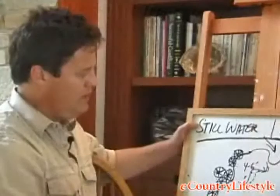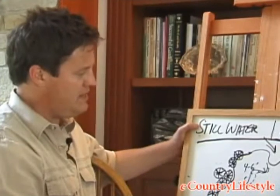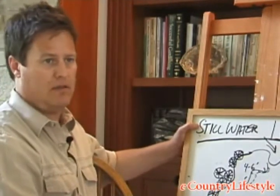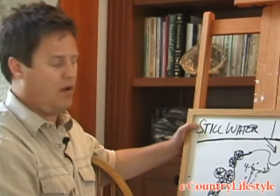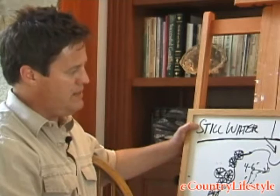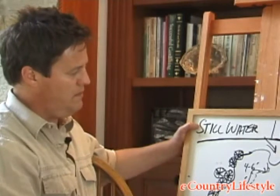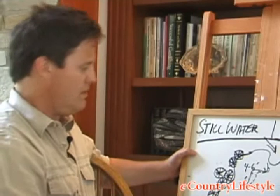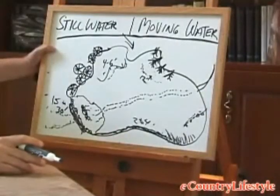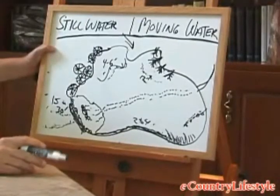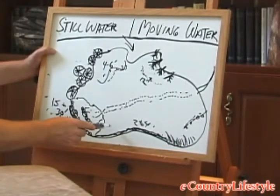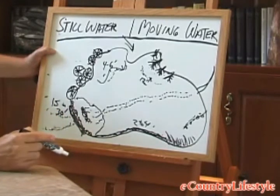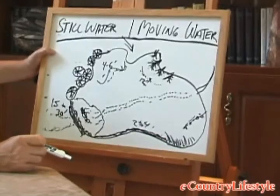Smallmouth bass is another story. Smallmouth bass tend to like cooler, more clear water, whether it be still water or moving water. In lakes and reservoirs during the summertime, you're going to find smallmouth bass in deeper water — they love to hang around submerged rocks and shoreline. You're not going to find these fish too shallow unless you're fishing later in the season, perhaps early fall or early springtime.